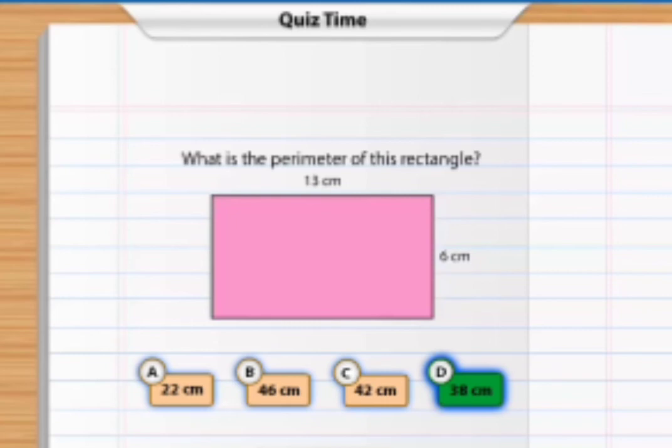The perimeter of this rectangle is given by 2 times the sum of 13 centimeters and 6 centimeters, that is 38 centimeters. So children, our answer of 38 centimeters is correct.